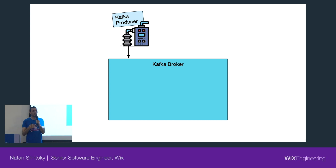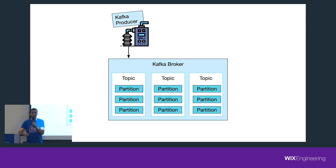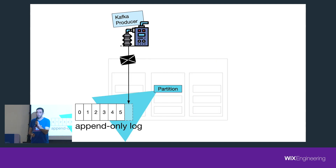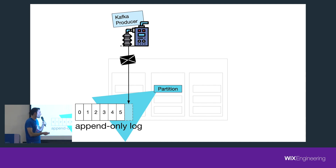Kafka is basically a message broker, where you have a service that produces messages to it. The messages are directed to specific topics, and each topic is divided into partitions. You can think of these partitions as append-only logs, so the producer just appends a new message at the end of the log — meaning quite high performance because it's a very simple operation.